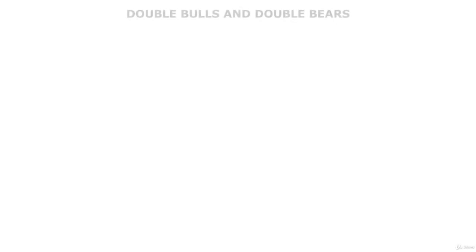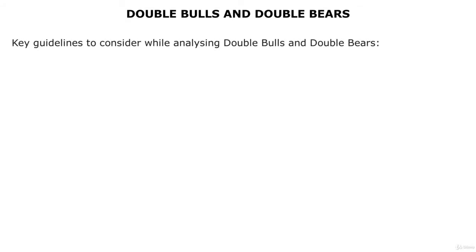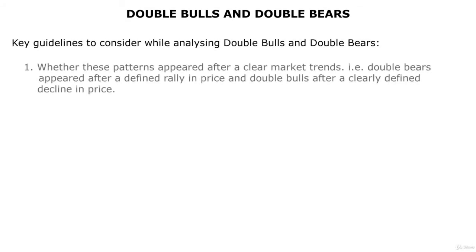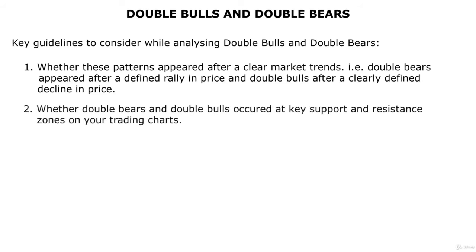While trading double bulls and double bears, you will keep the following guidelines in mind: whether these patterns appeared after a clear uptrend or downtrend respectively. The importance of the pattern increases when they appear after clearly defined trends. Whether these patterns are also associated with key support and resistance zones on your trading charts — if this happens, you are able to trade these patterns with increased confidence.